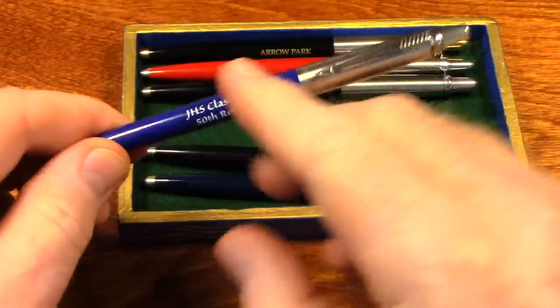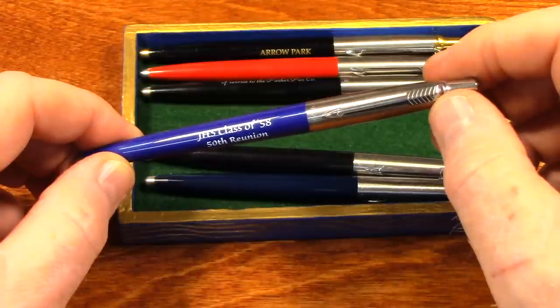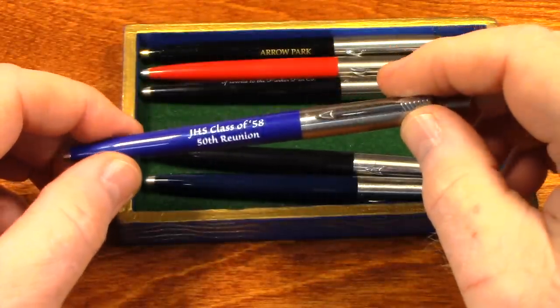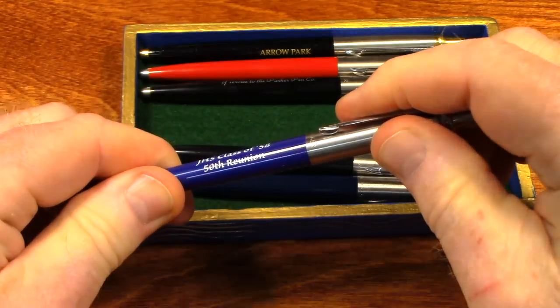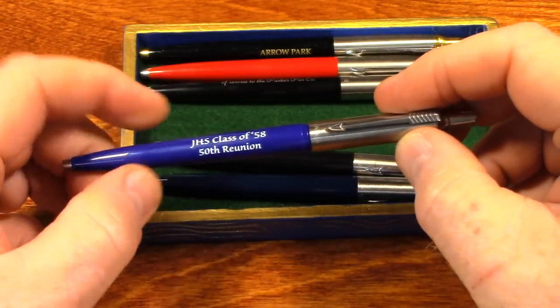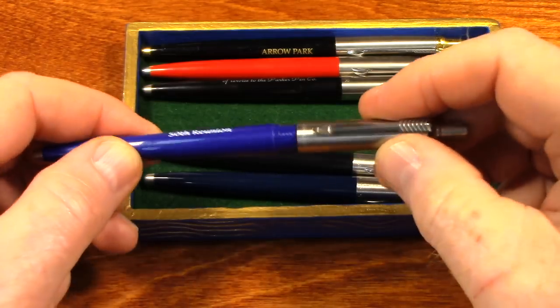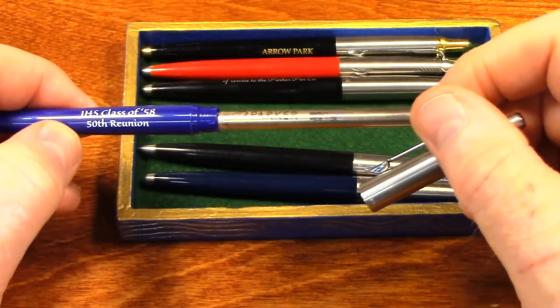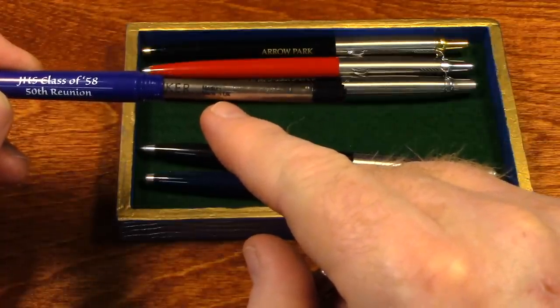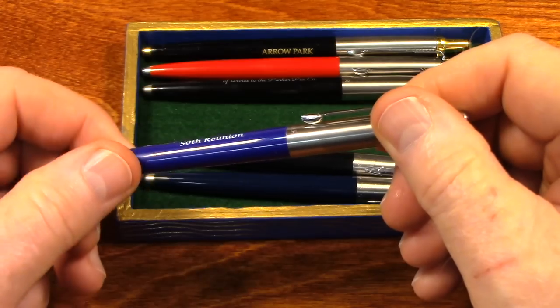And here's one with an inscription on it. JHS Class of 58, 50th Reunion. So that would be Janesville High School. So in 2008, there was a reunion, a 50 year reunion. So 2008, so you know this is going to have plastic threads. Yes, and it does. And it says on the refill, 'Made in United Kingdom.' It says UK. So made in the United Kingdom. That's about right, because 2008, that's where they made them.